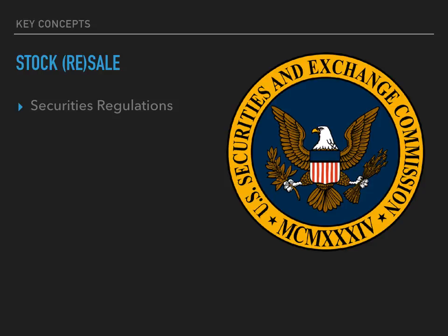Securities regulations govern companies in two different ways. They govern private companies according to Regulation D. Regulation D allows companies to sell stock with very few additional regulations if the stock is sold primarily to accredited investors. Accredited investors are high-wealth individuals — currently defined as individuals with more than a million dollars in net wealth, not including their primary residence, who earn over $200,000 a year singly, or $300,000 a year with their spouse.